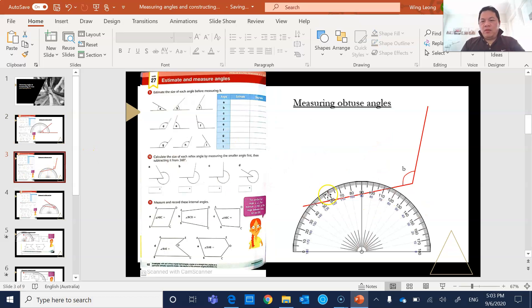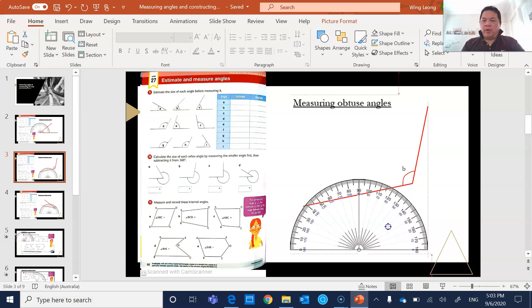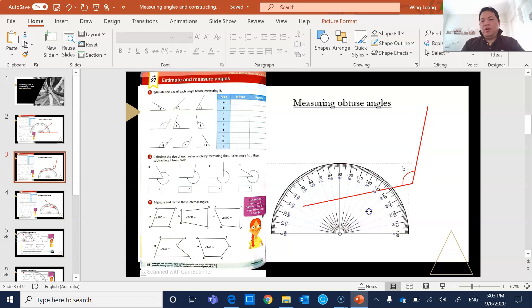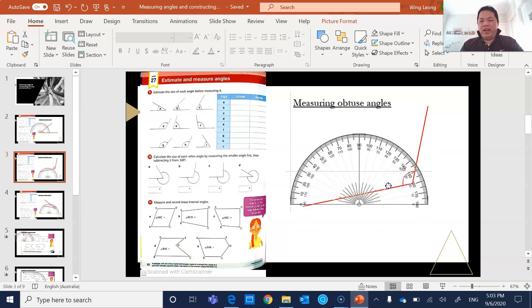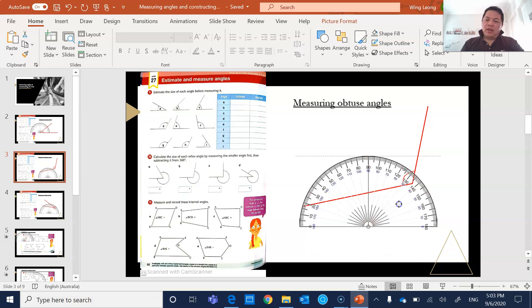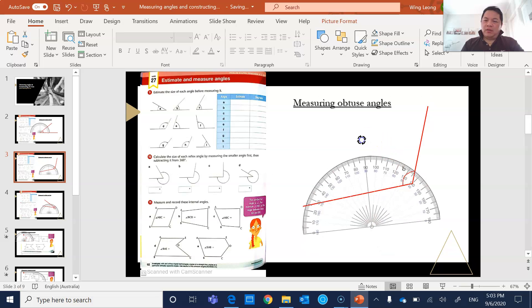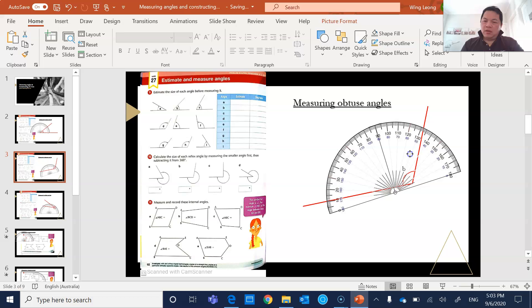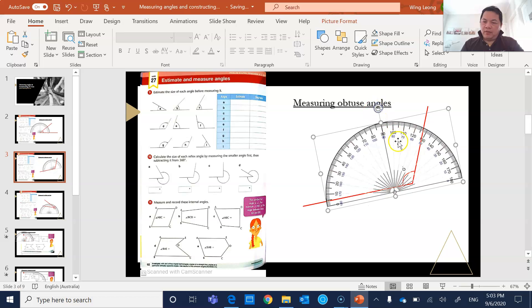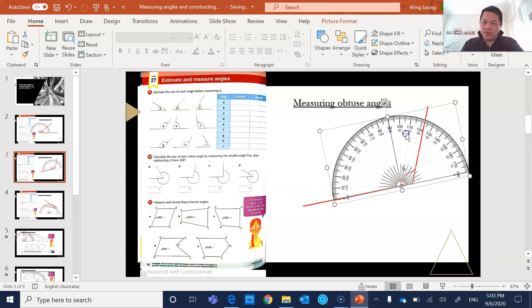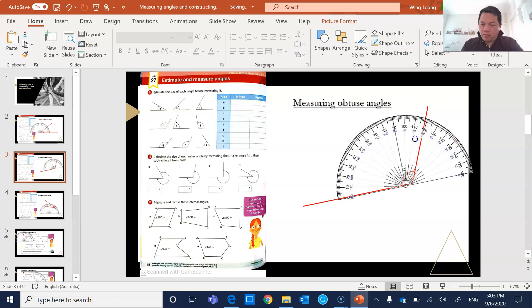What about the next one? Oh, what about this? Obtuse angles. So how do we go about measuring these obtuse angles? Obtuse angles are angles between, more than 90 but less than 180. So we have this angle here. Again, you rotate the protractor a little bit. Adjust. It's too much. I rotate it again. In fact, if you are not using the virtual one, it's so much easier, isn't it? So it might, that's why it's slightly more difficult. So I move it slightly.